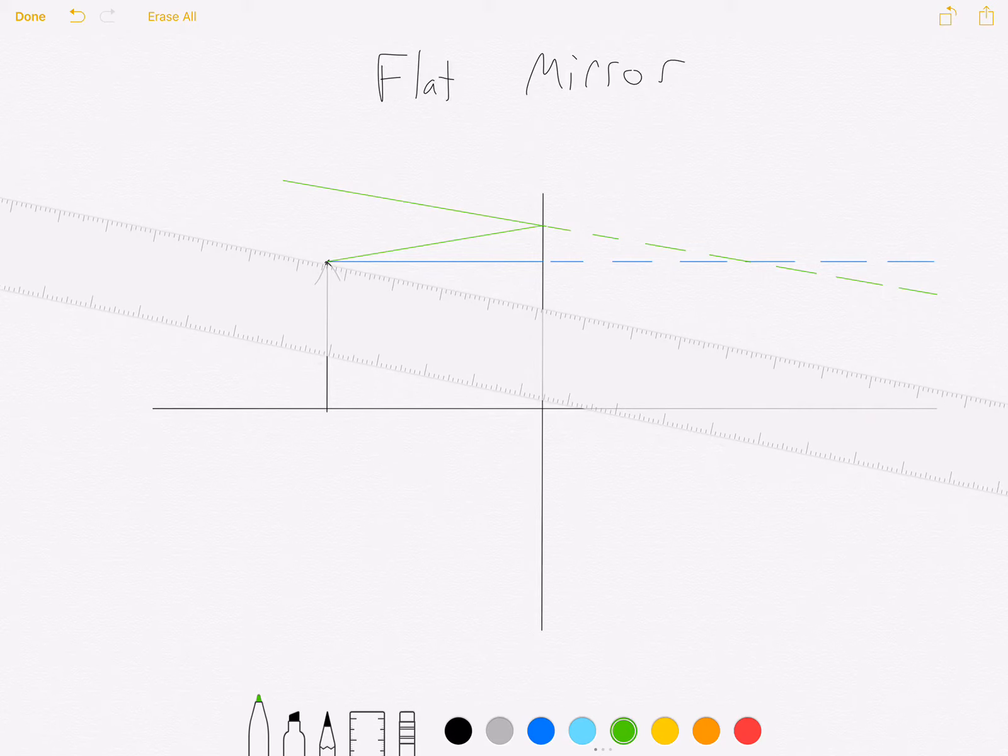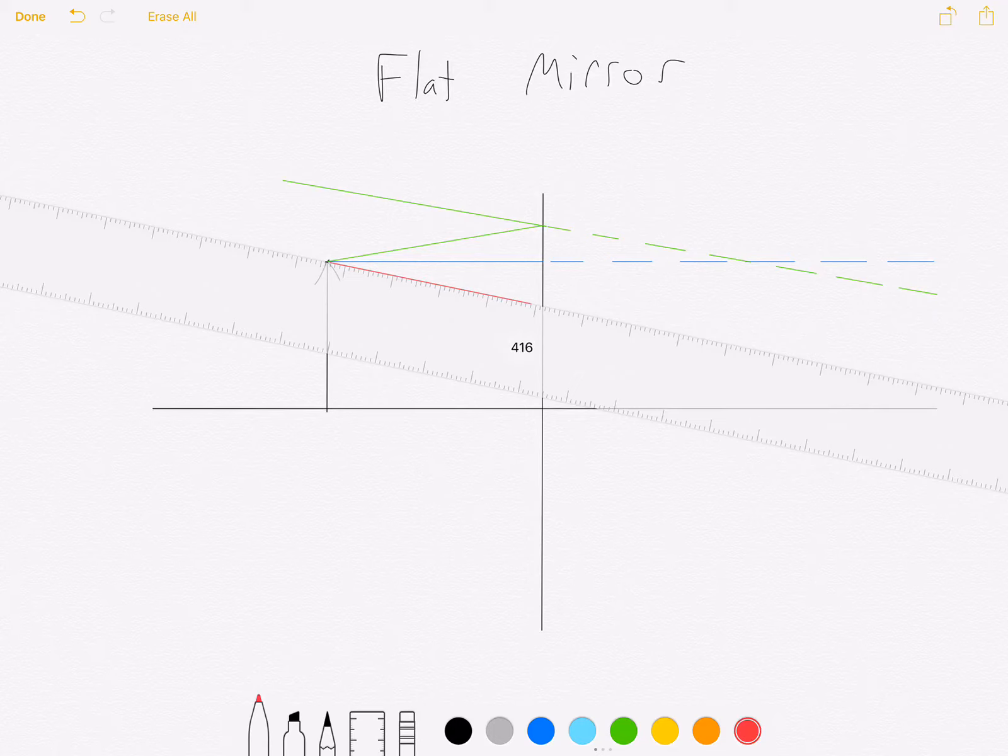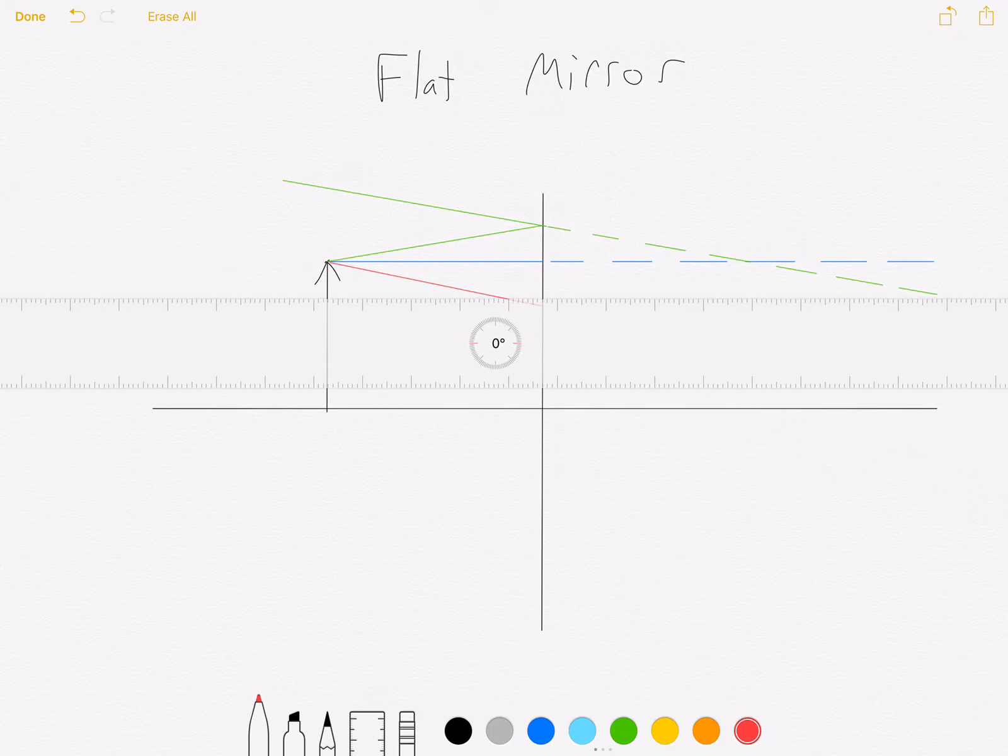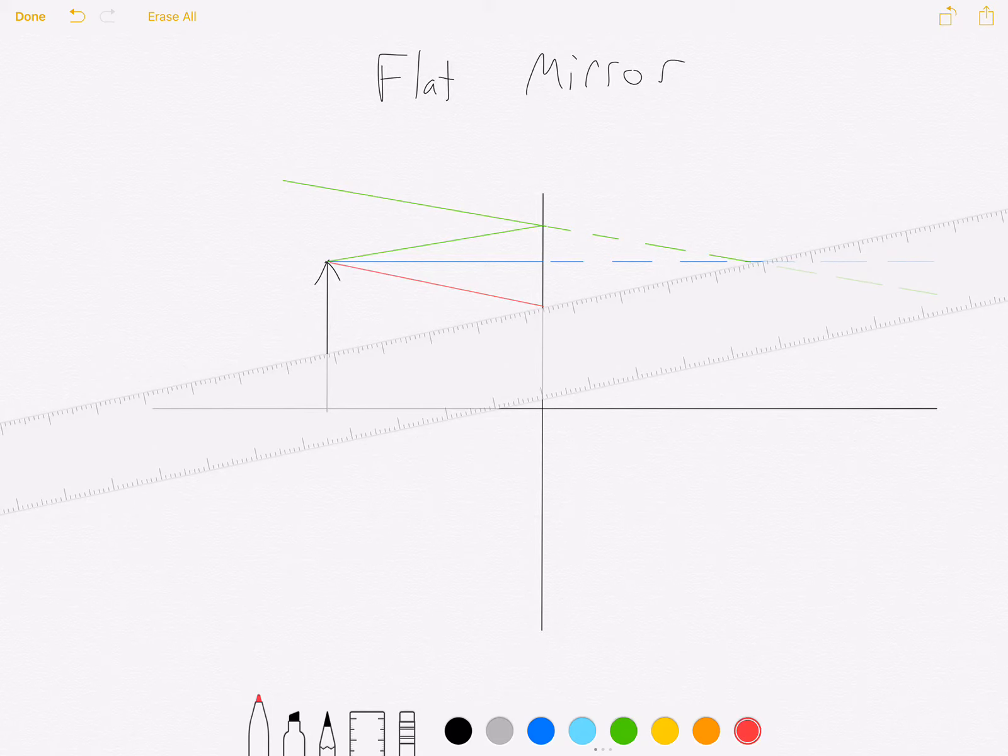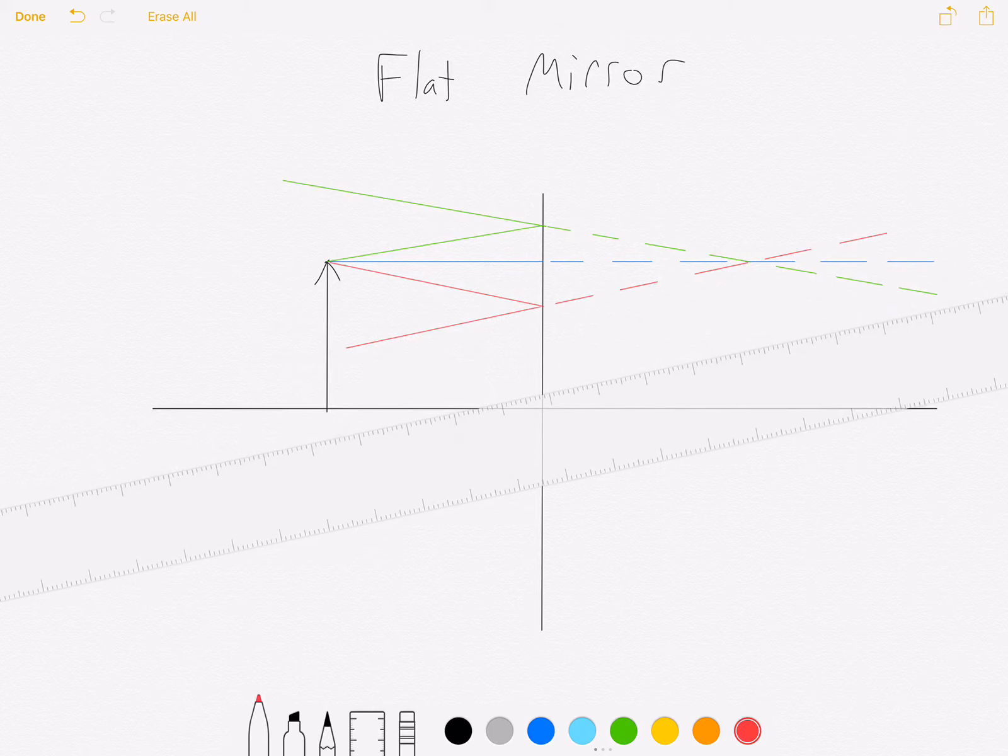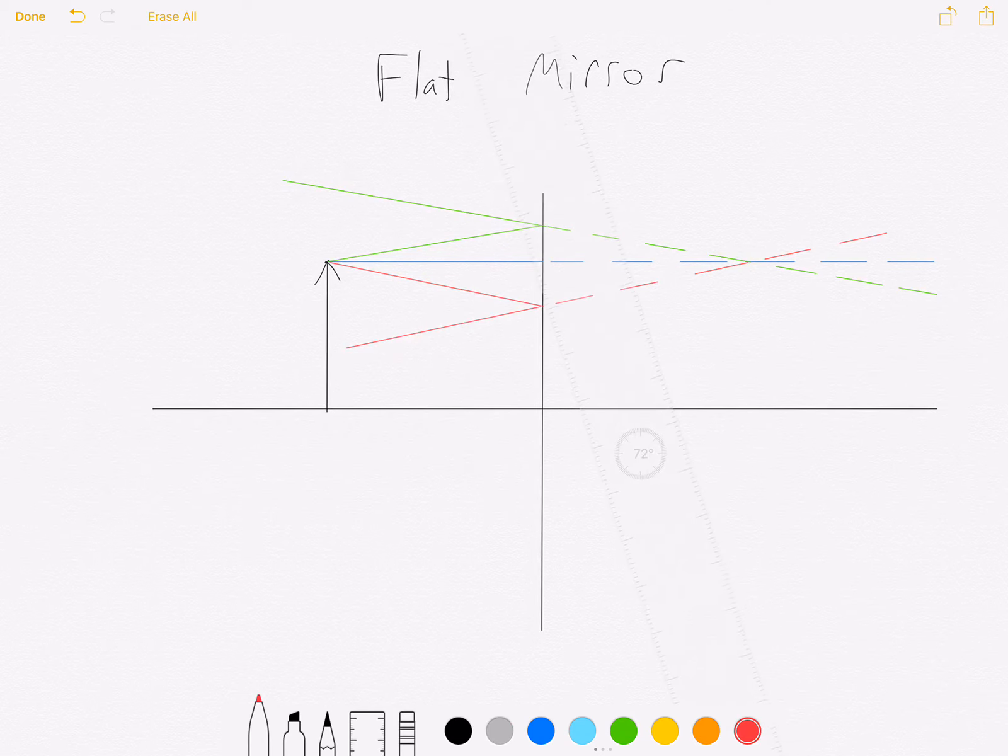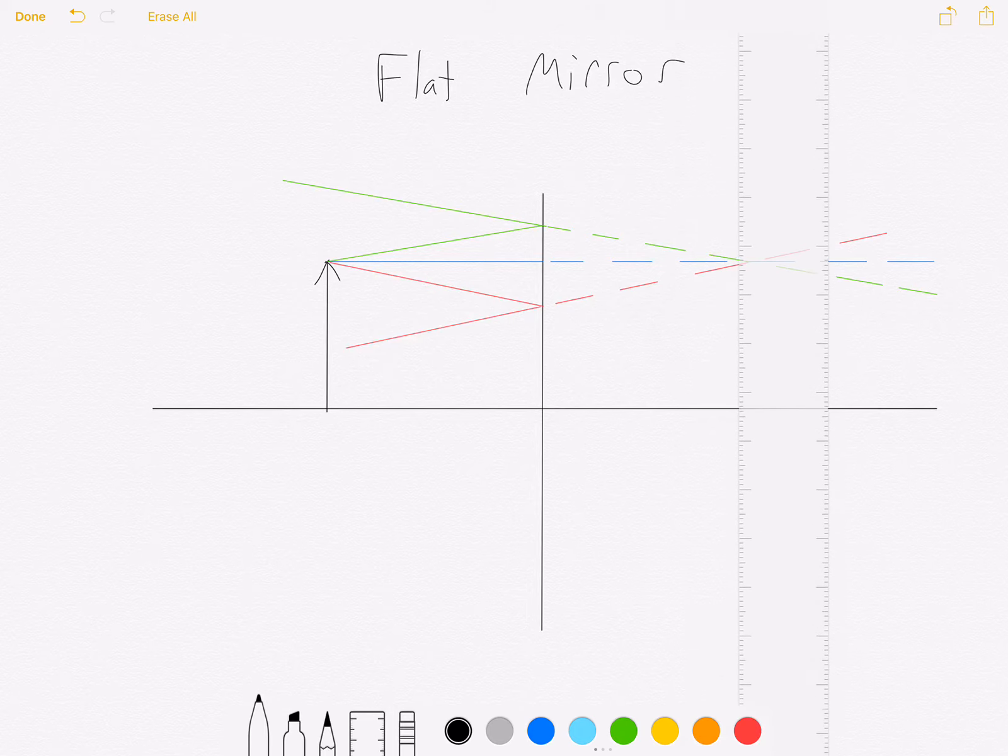And let's do 12 degrees downward. 12 degrees in means 12 degrees out. Make sure you line it up carefully. When we backtrack, we see that all three rays intersect at the same point, which is right about here.